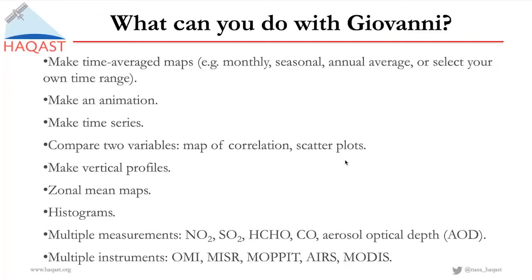In Giovanni, there are more than thousands of variables available. For those of you interested in atmospheric chemistry, the most relevant quantities include nitrogen dioxide, sulfur dioxide, formaldehyde, carbon monoxide, and aerosol optical depth (AOD). These measurements are collected from different satellite instruments including OMI, MISER, MOPITT, AIRS, and MODIS.